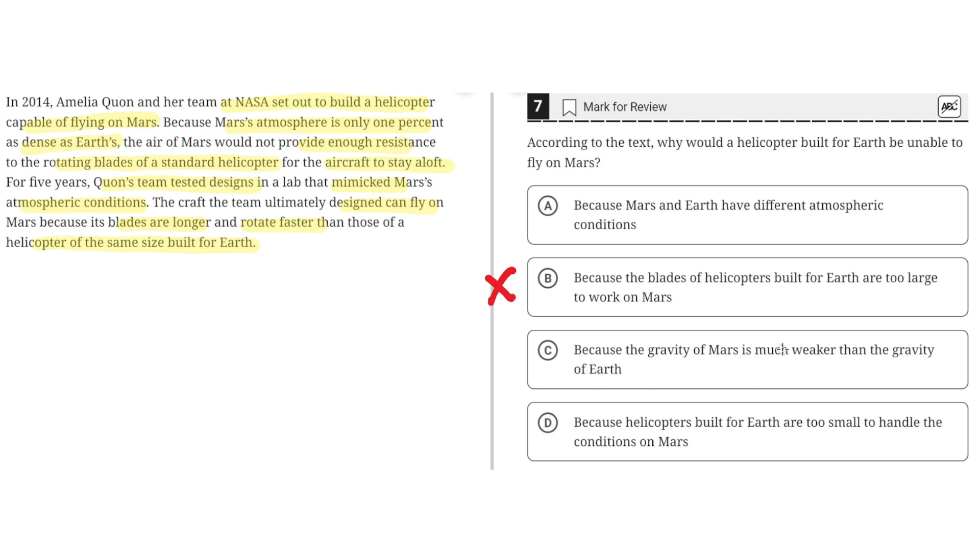C: Because the gravity of Mars is much weaker than the gravity of Earth. This is incorrect because the text doesn't discuss or compare the gravity of Mars to the gravity of Earth. Instead, it discusses atmospheric conditions and how Mars has a less dense atmosphere compared to Earth. So C is incorrect.